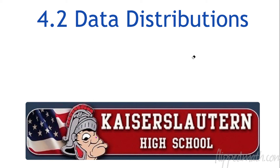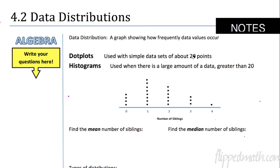Good afternoon and welcome back. This is Mr. Kelly at Kaiser Slaughter High School. We're talking about data distributions. A data distribution is a graph showing how frequently data values occur. This is important because we want to know what's going to happen or how often something has happened.